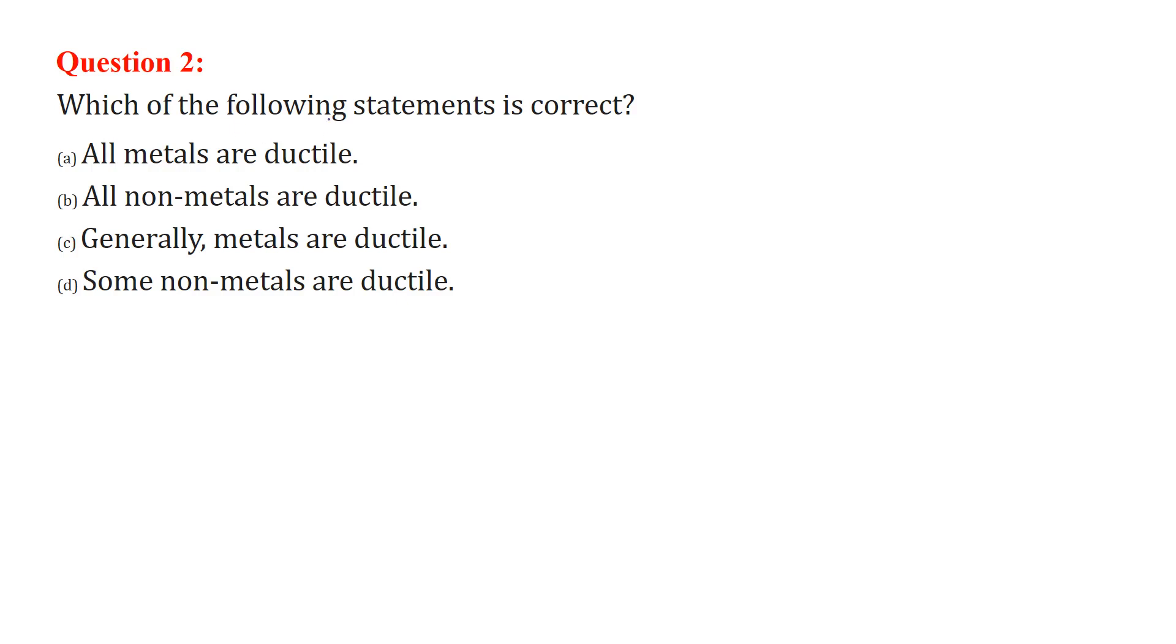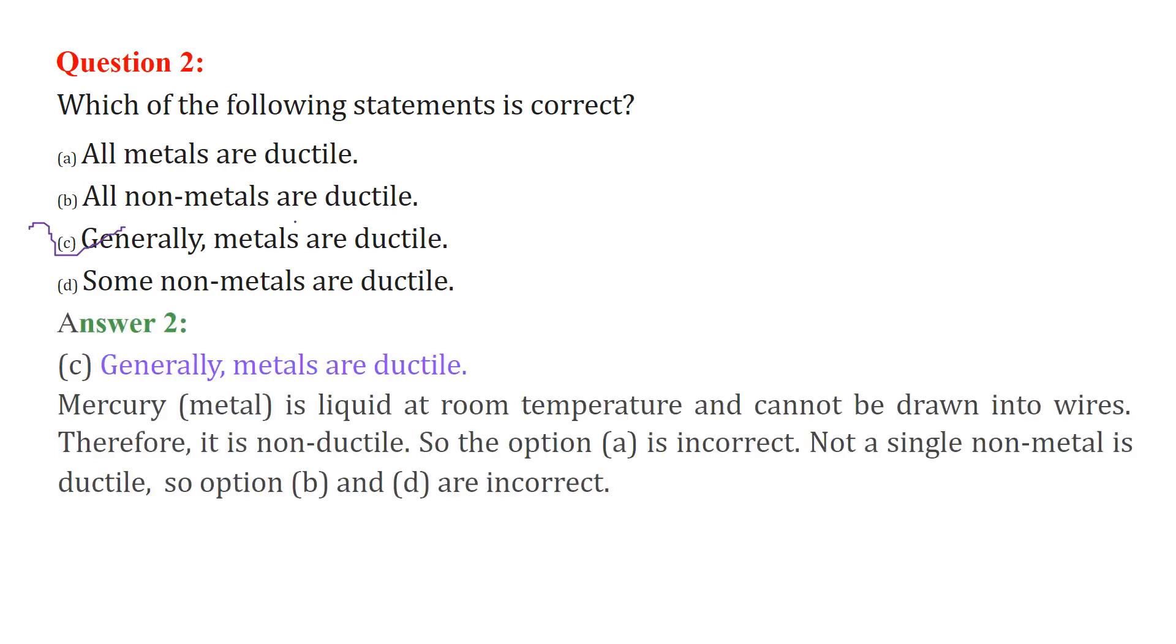Which of the following statement is correct? All metals are ductile. All non-metals are ductile. Generally metals are ductile. Some non-metals are ductile. The answer is C. We will see others because mercury for example is liquid at room temperature and cannot be drawn into wires therefore it is non-ductile.